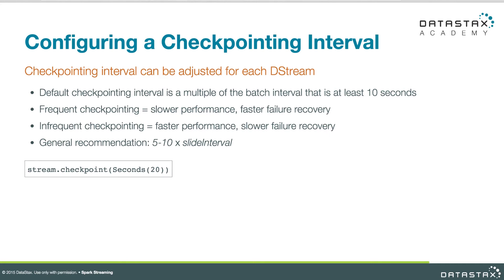The slide interval is the number of seconds the window moves along each time the transformation runs. In our examples we've been using four seconds for the slide interval because four seconds is our batch interval — that's just a decision made for illustration. In your case, look at your slide interval and use that five to ten times rule of thumb to get started.